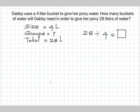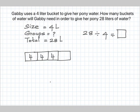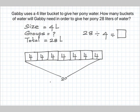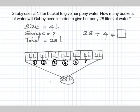For the tape diagram, we know the size of one group is 4, so let's count by 4 until we reach the total of 28: 4, 8, 12, 16, 20, 24, 28. So we know the total is 28 liters, and each partition is 4 liters. Let's count the number of groups: group 1, group 2, group 3, group 4, group 5, group 6, group 7.